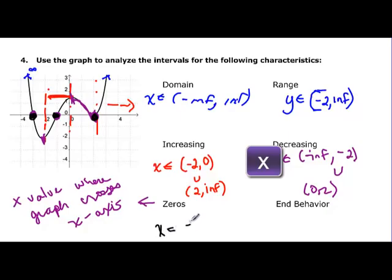So we would say that x is equal to those three different values. It's equal to negative 3, it looks like, and negative 1, and positive 2.